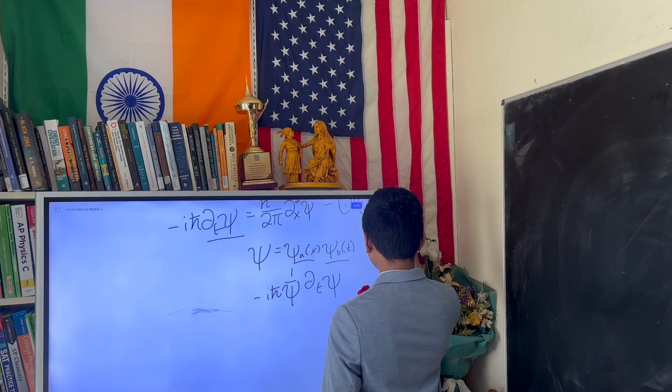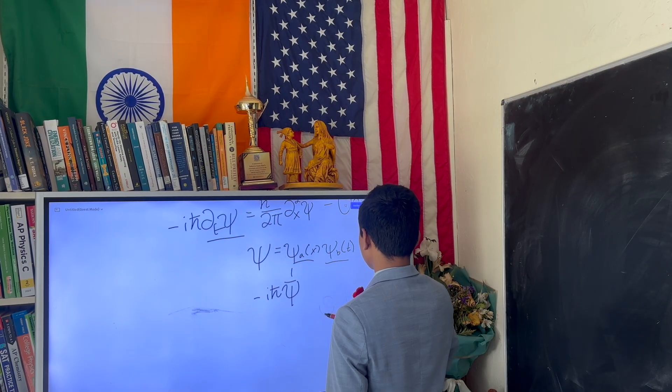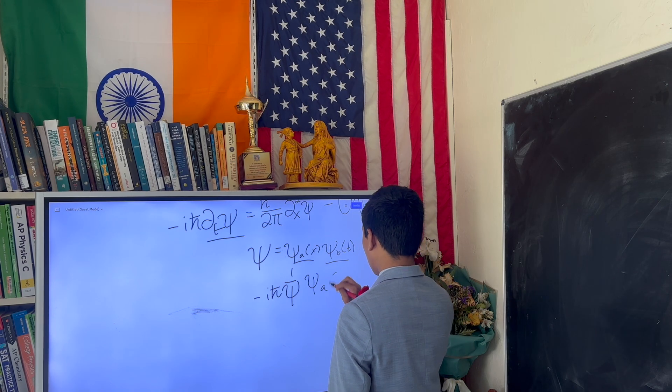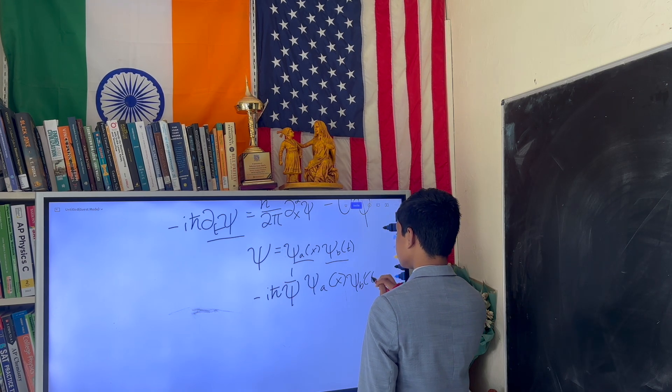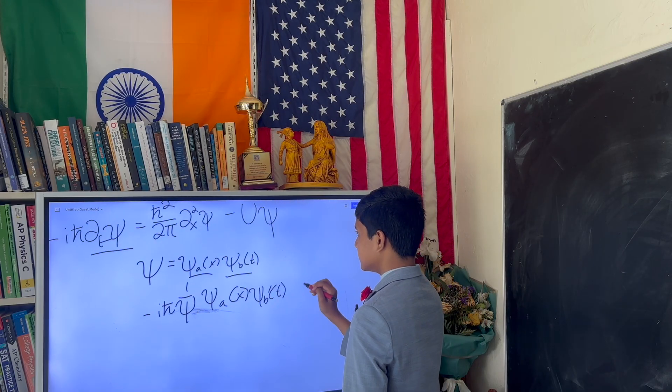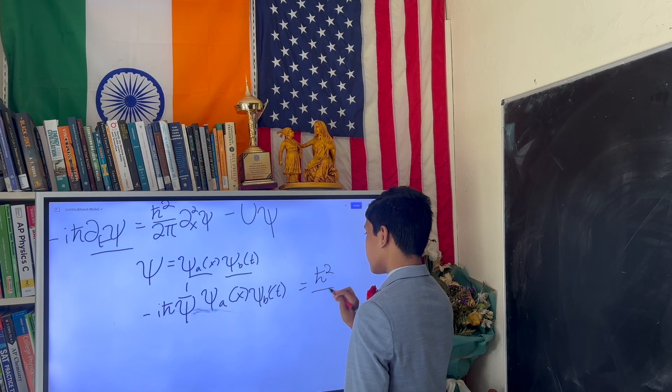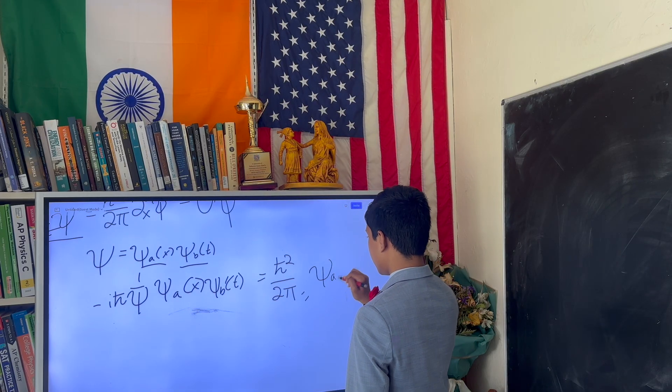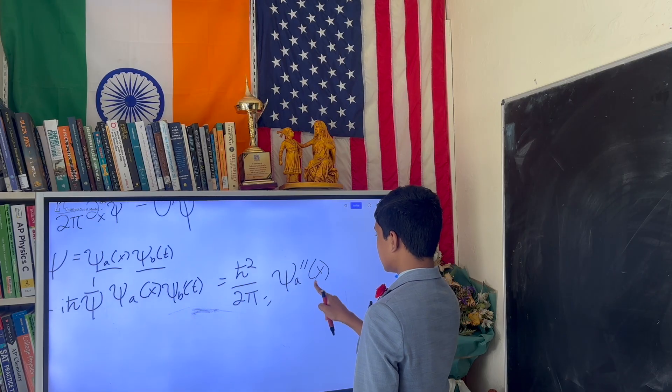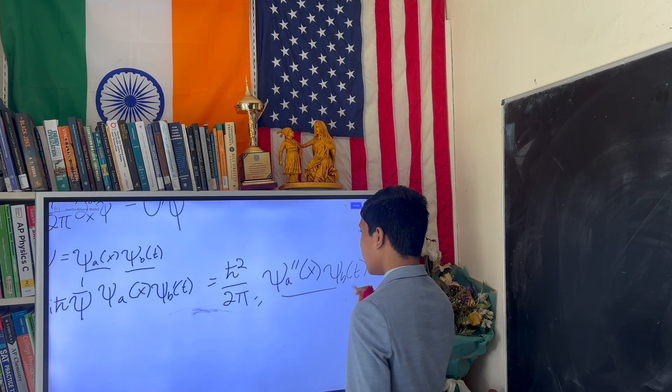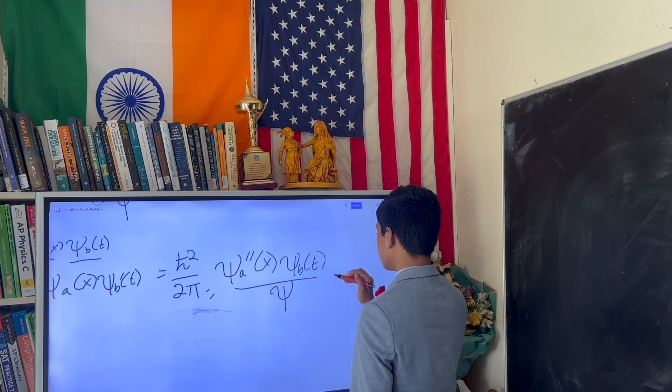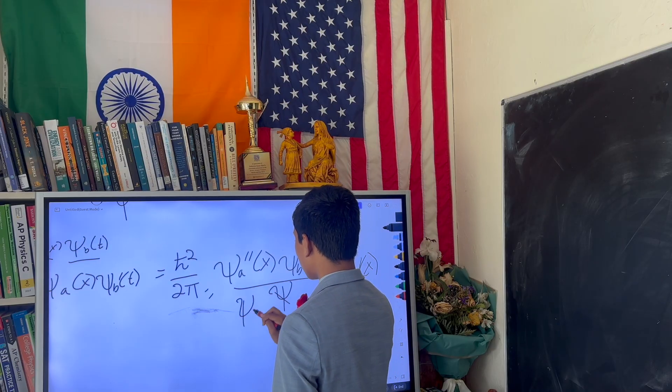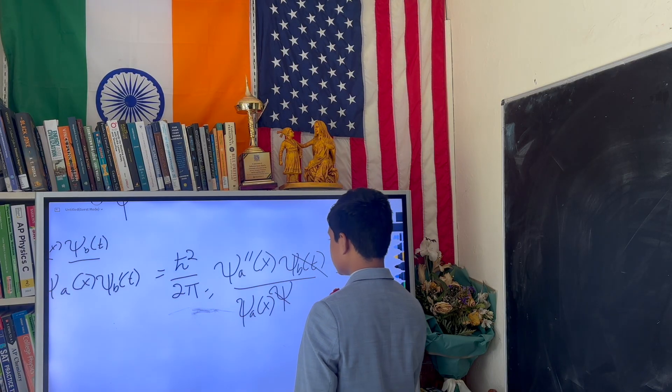What's this going to be? Well, it's just going to be psi a of x, psi u prime of t, equal to h bar squared over 2m. This is going to be psi a of x, psi t prime over t, over psi, minus u, which is the function of x.